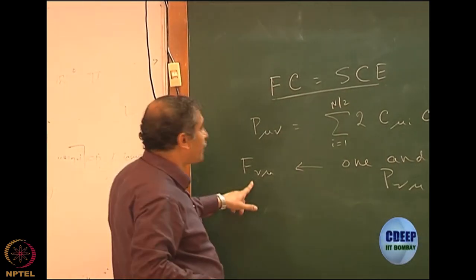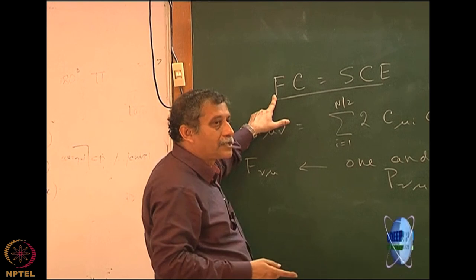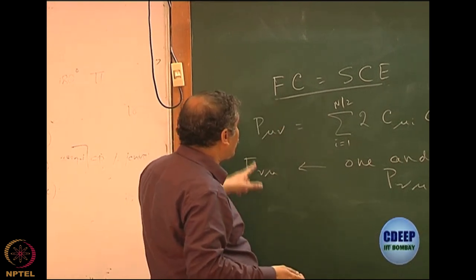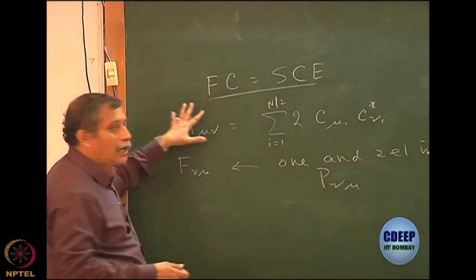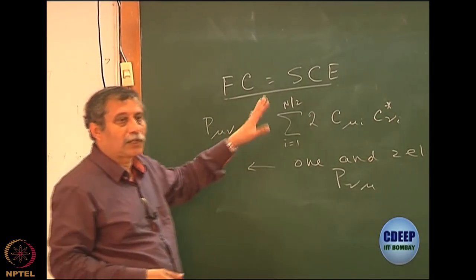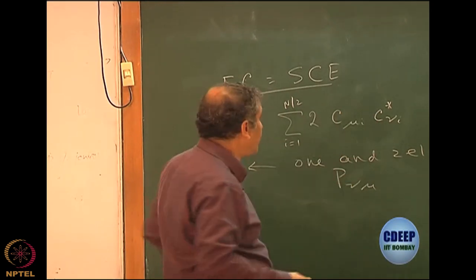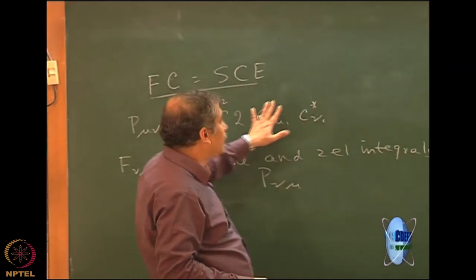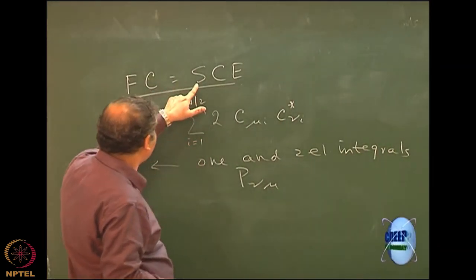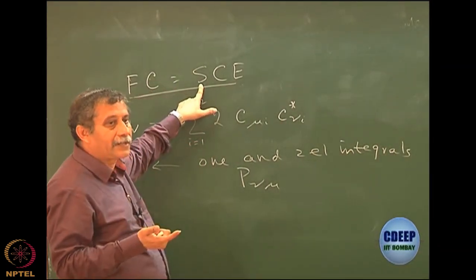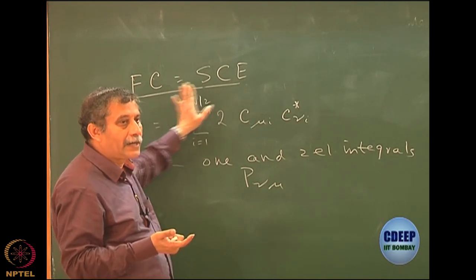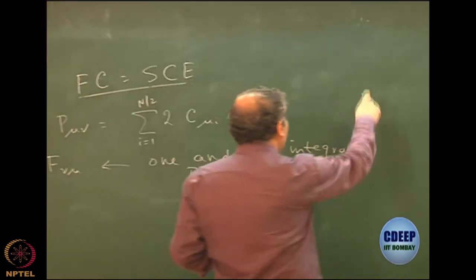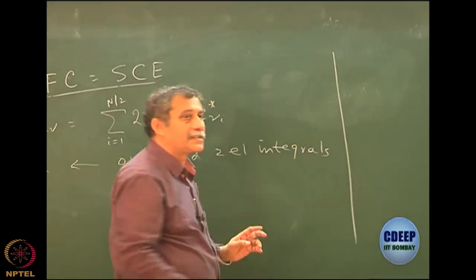After you construct the Fock matrix at every iteration, you have to solve this equation. The problem with this equation is that the original basis sets are not orthogonal — not orthonormal or orthogonal. That is the reason it did not become an eigenvalue equation. If they were orthonormal, then S would have become the unit matrix and this would have been automatically an eigenvalue equation. So the strategy is to orthogonalize the basis set.